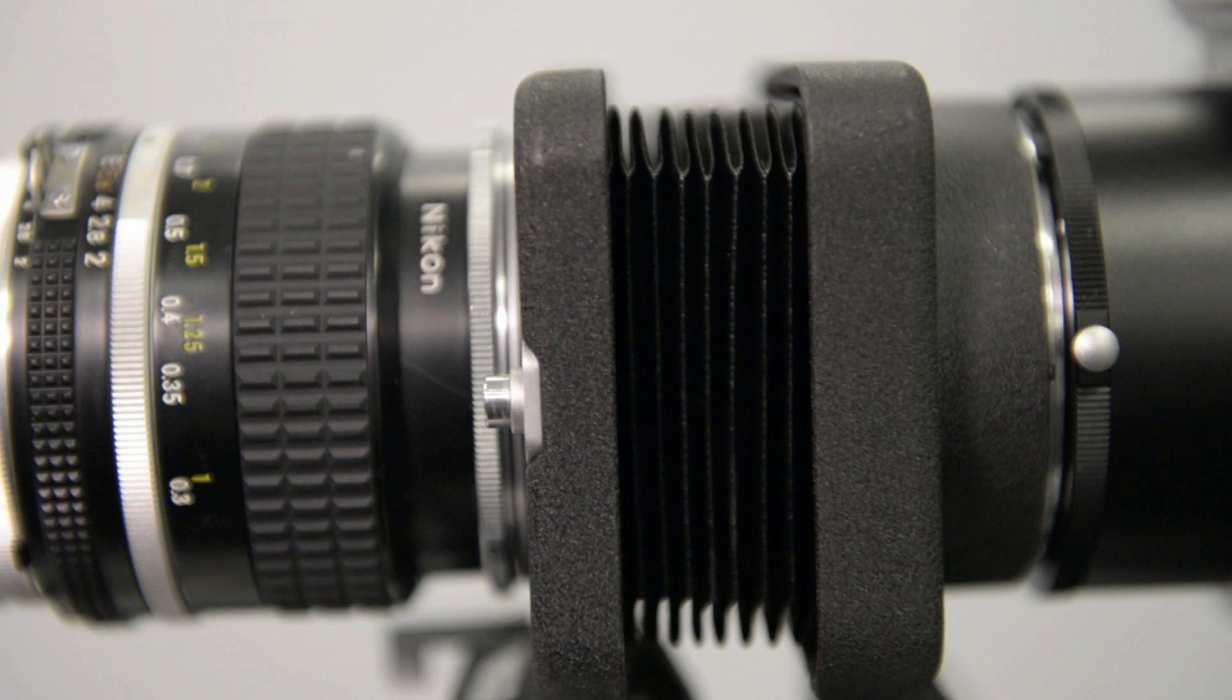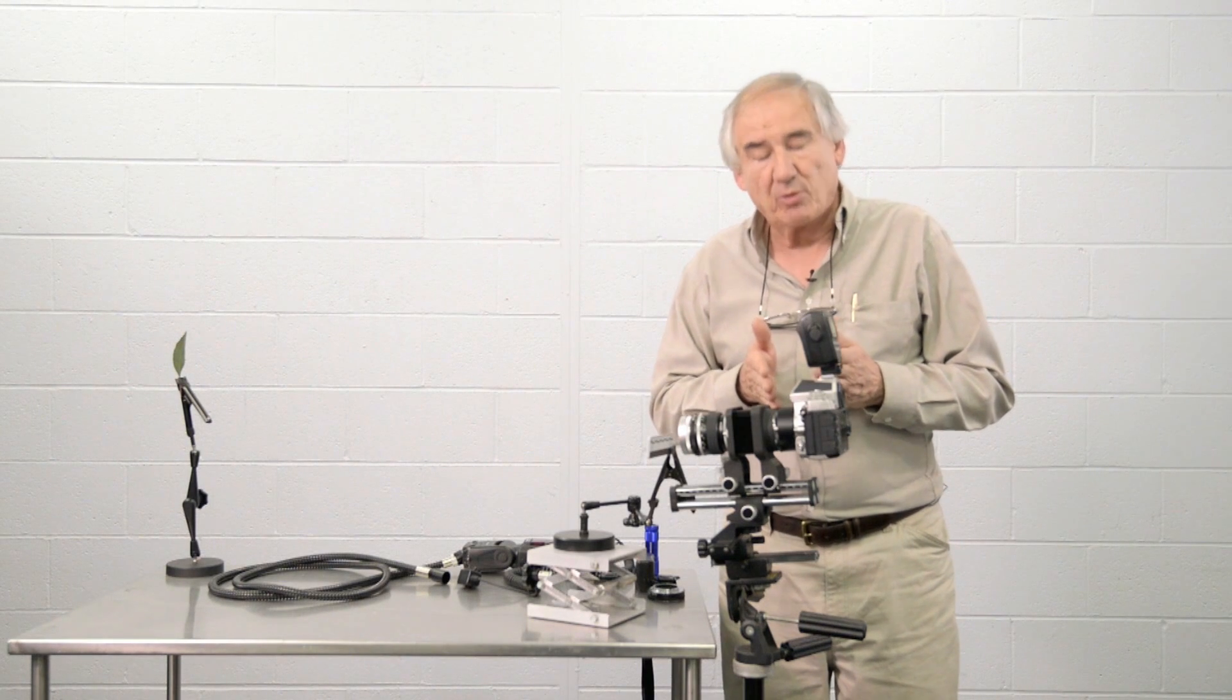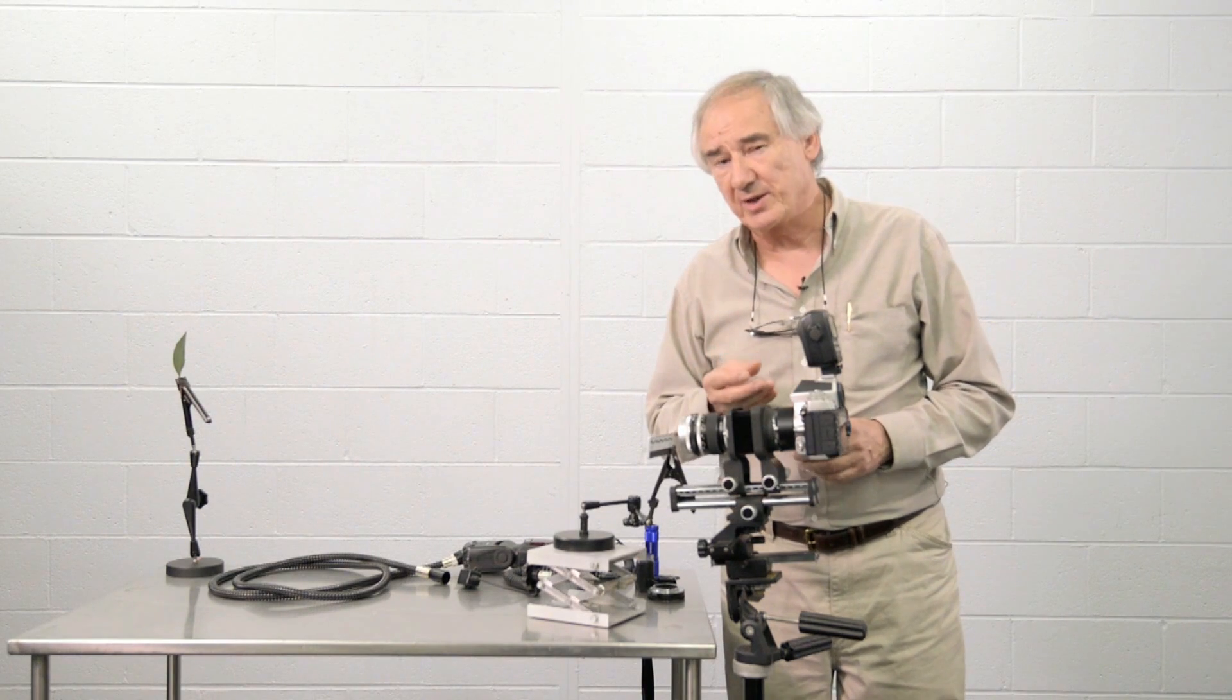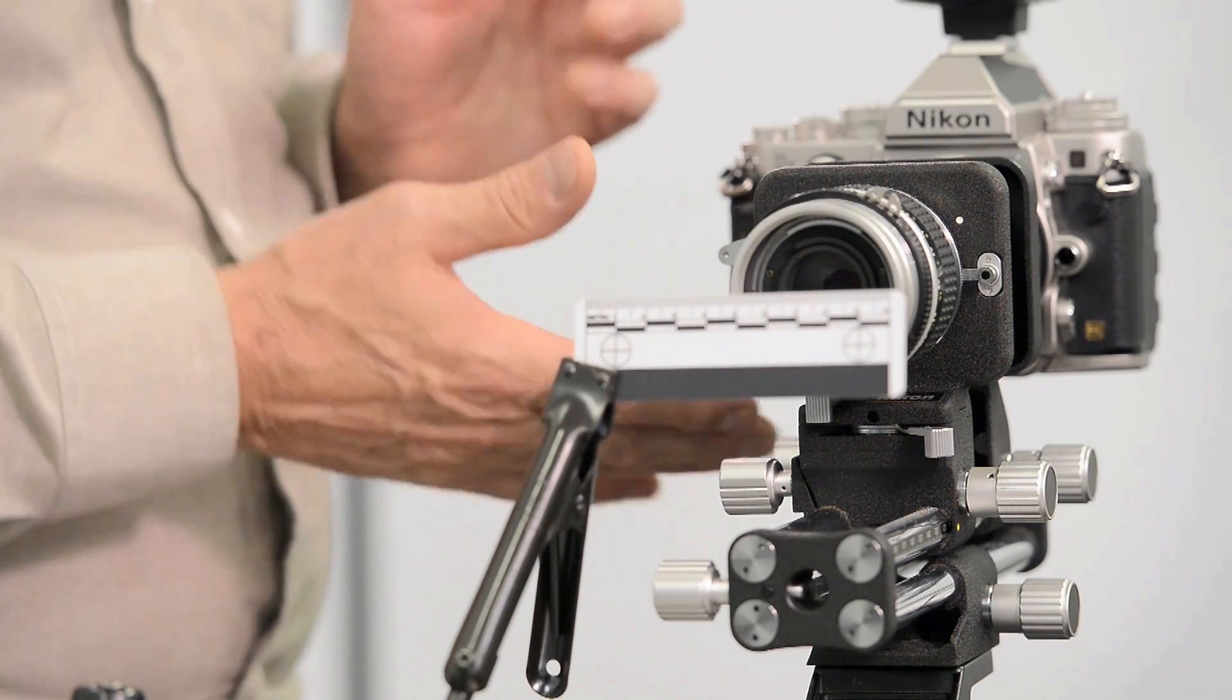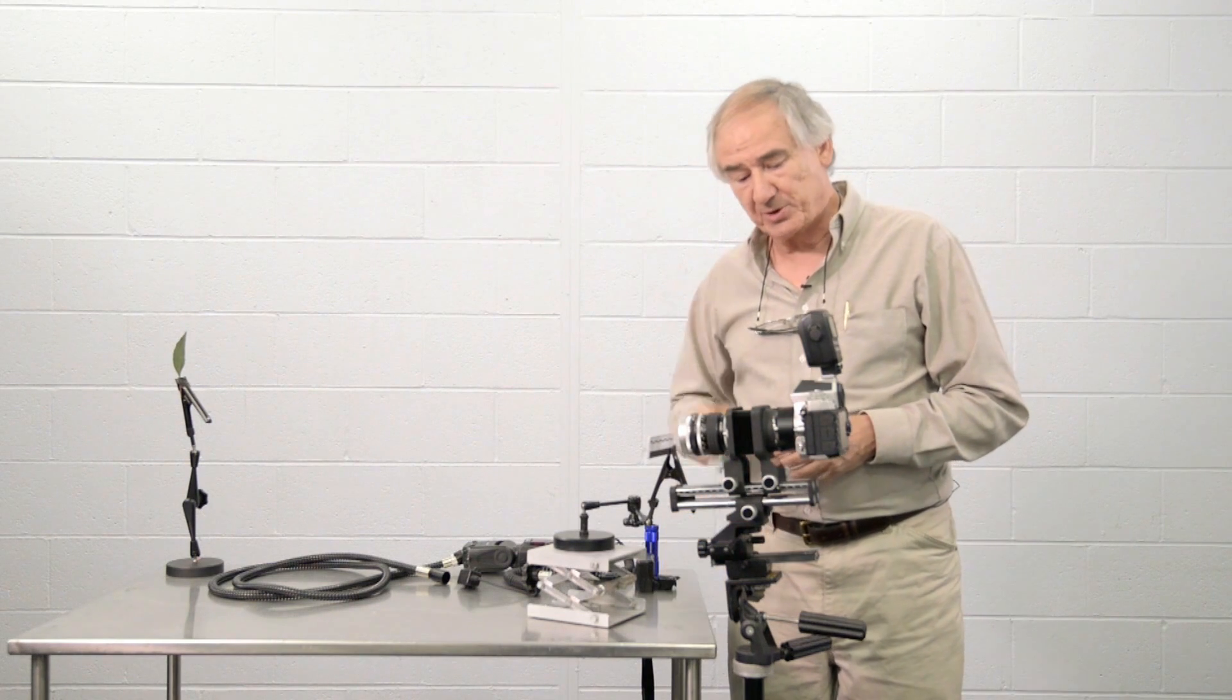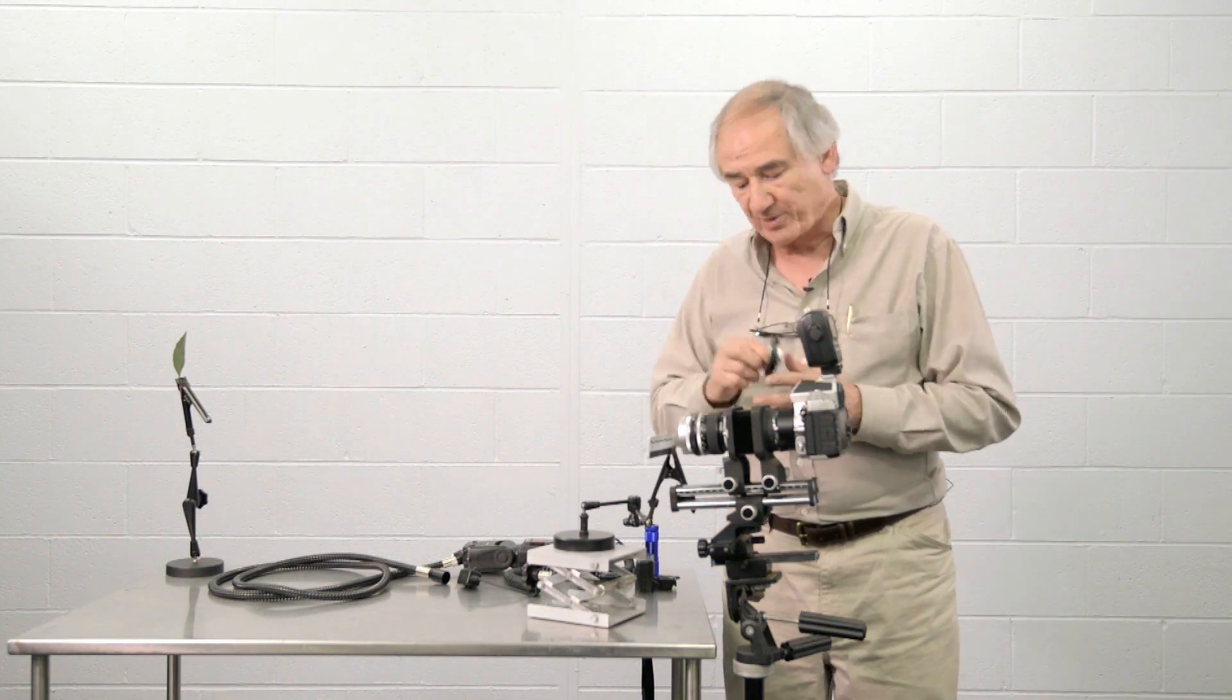It's now connected to the bellows with an extension tube. And the extension tube just simply moves the camera back slightly away from the bellows. Because you'll find that some of the new cameras with a battery compartment that extends underneath won't allow it to actually go on a bellows. So by the simple use of an extension tube like this, you can put the camera away from the bellows.